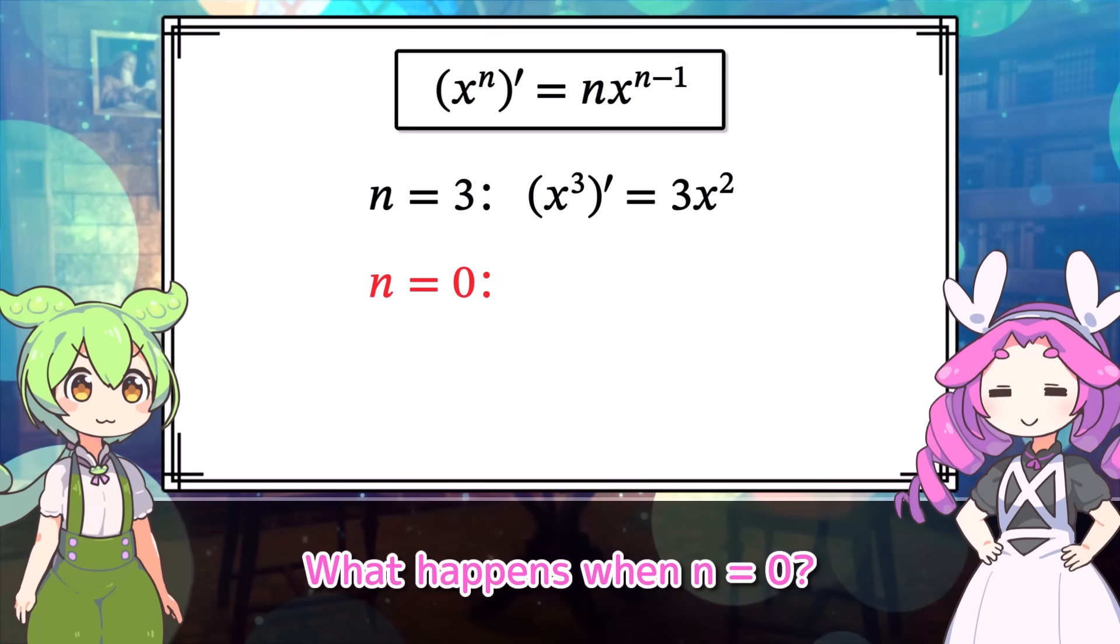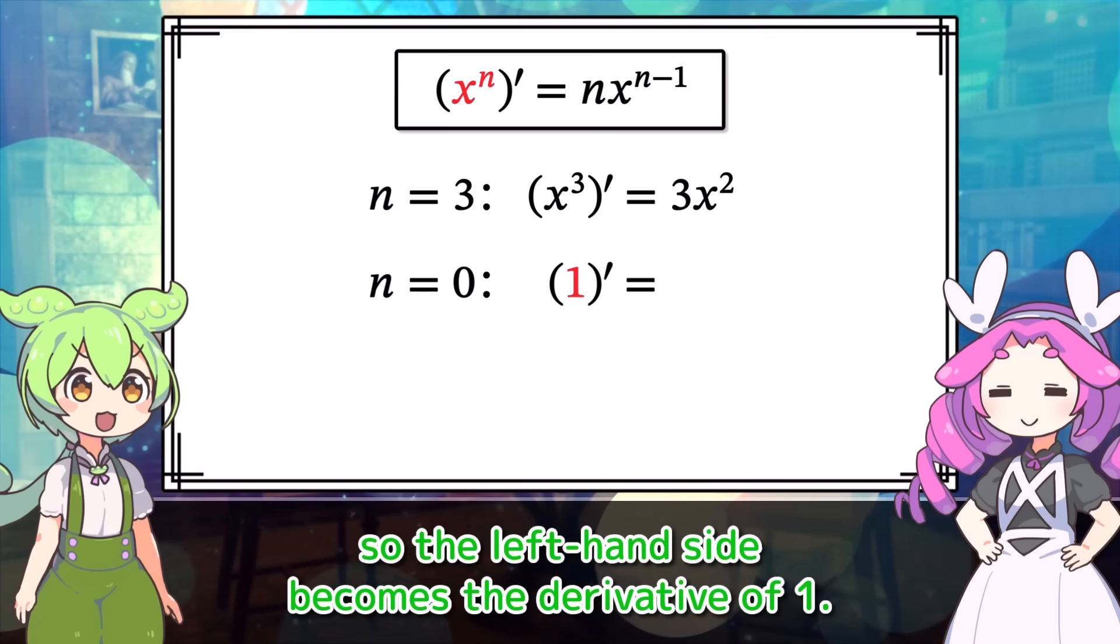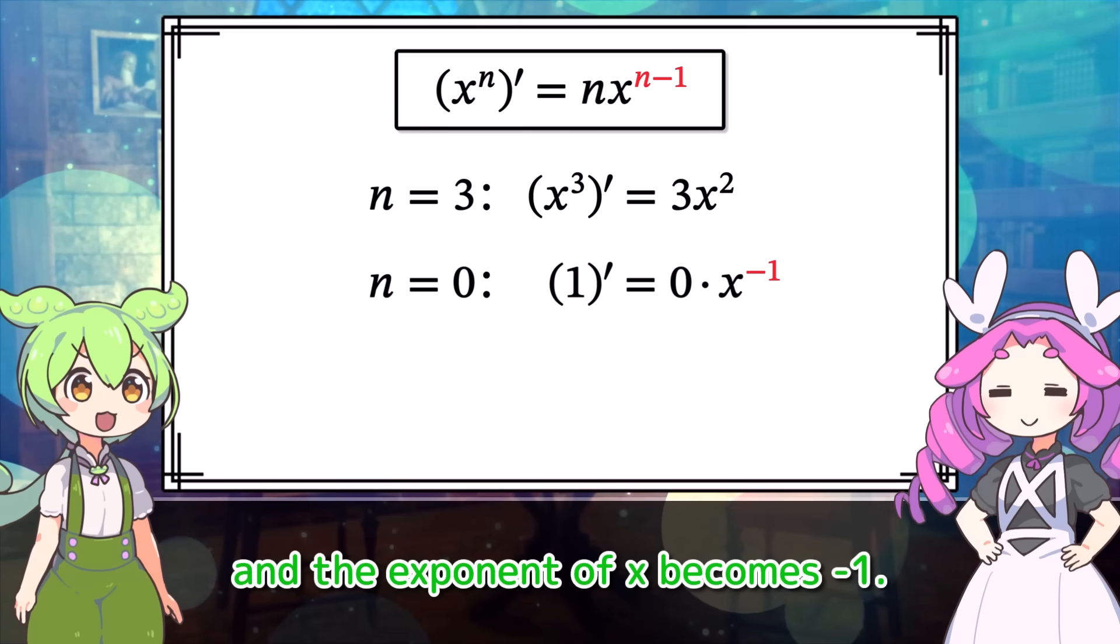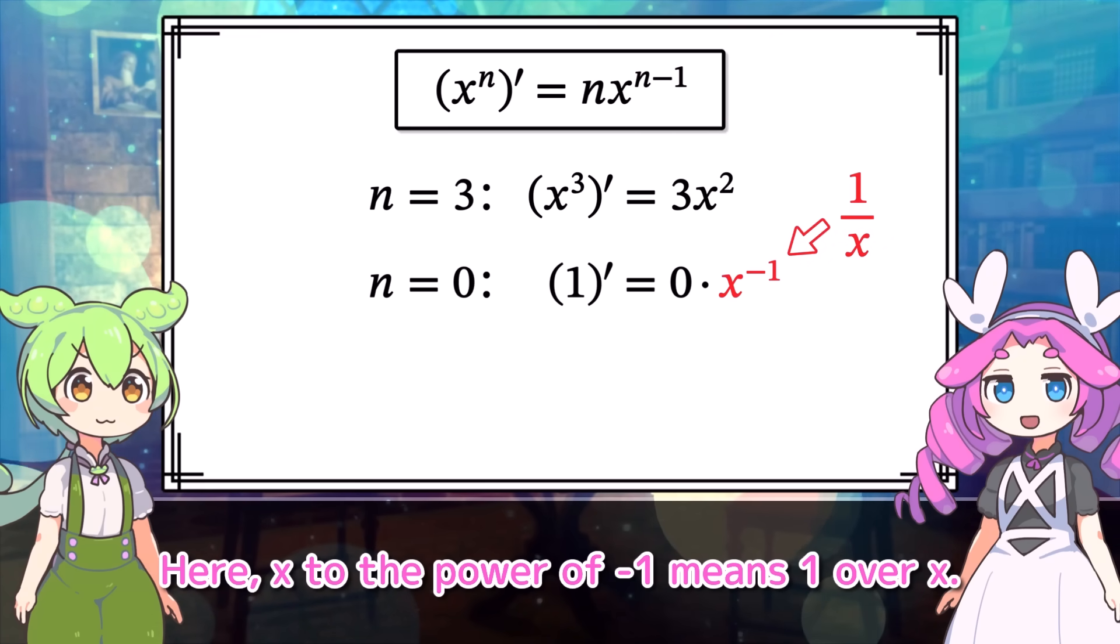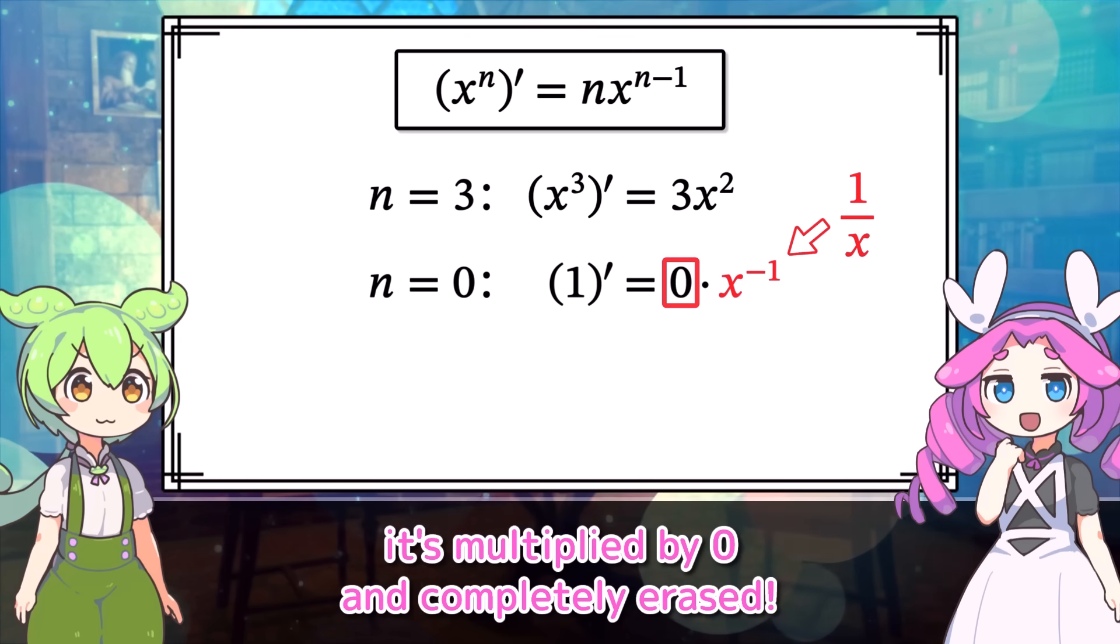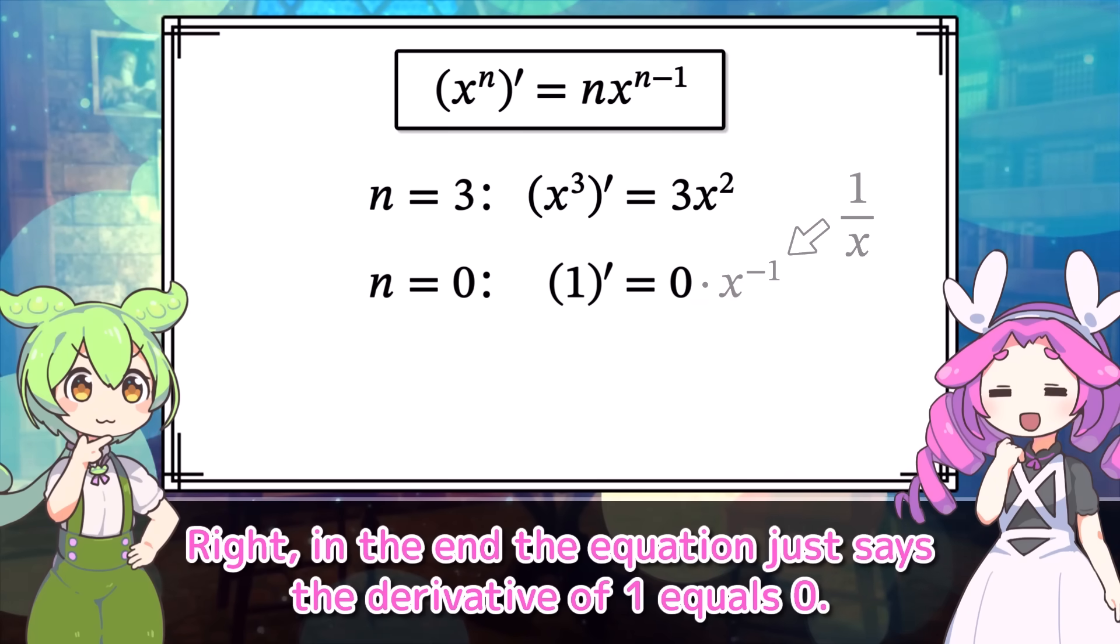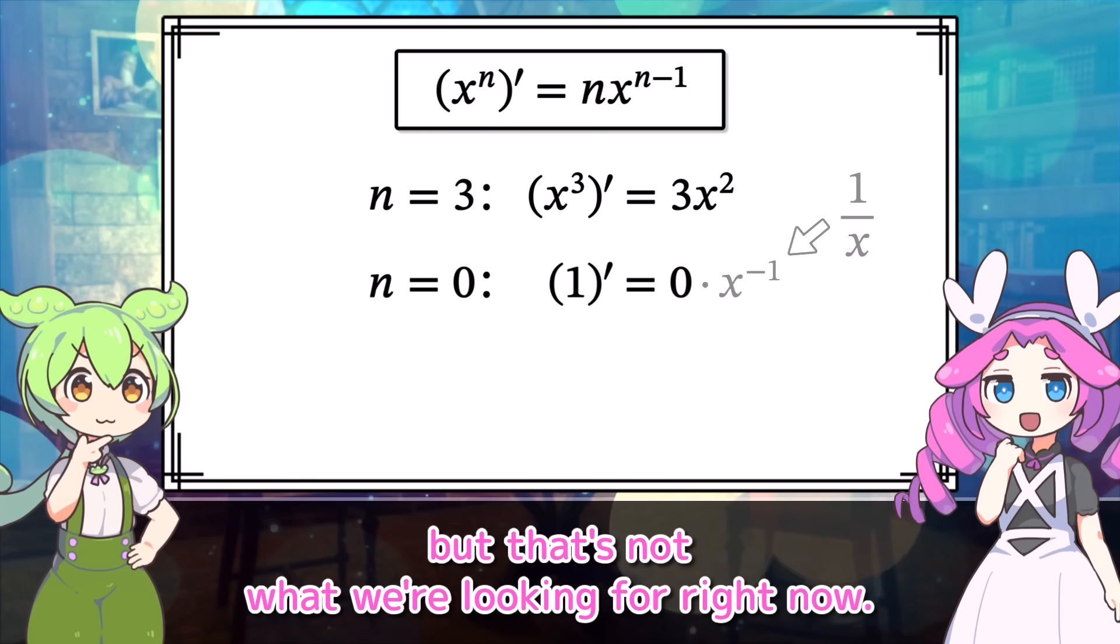Now here's where the problem starts. What happens when n equals 0? Um, first, x to the power of 0 is 1. So the left-hand side becomes the derivative of 1. On the right-hand side, the coefficient becomes 0. And the exponent of x becomes negative 1. Okay, that's correct. Here, x to the power of negative 1 means 1 over x. So we should have seen 1 over x appear here. But sadly, it's multiplied by 0 and completely erased. Well, maybe not sad. But yeah, it's definitely gone. Right. In the end, the equation just says the derivative of 1 equals 0. It's not wrong that the derivative of a constant is 0. But that's not what we're looking for right now.